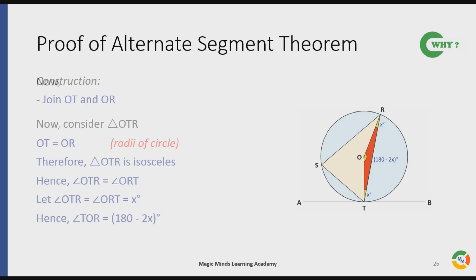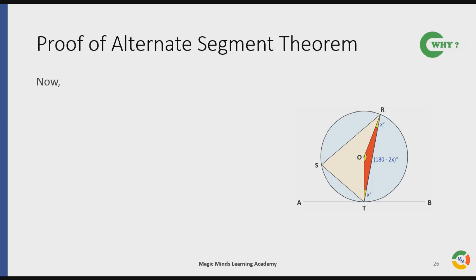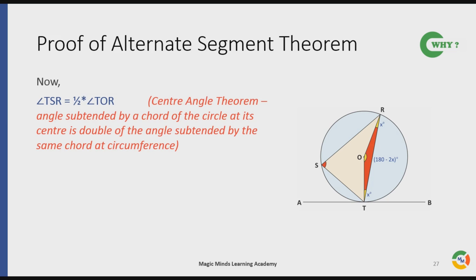Now angle TSR is equal to half of angle TOR. Why? The answer is Center Angle Theorem. For quick revision, Center Angle Theorem says that the angle subtended by a chord of the circle at its center is double of the angle subtended by the same chord at circumference.